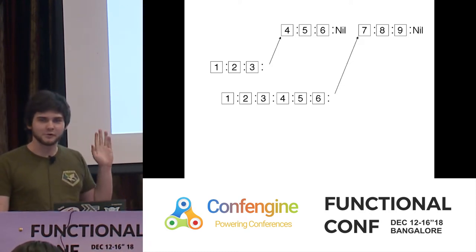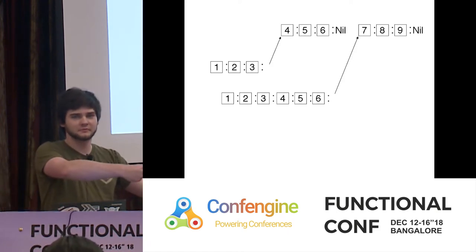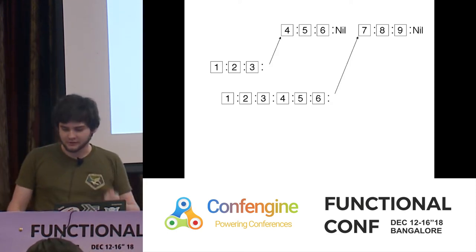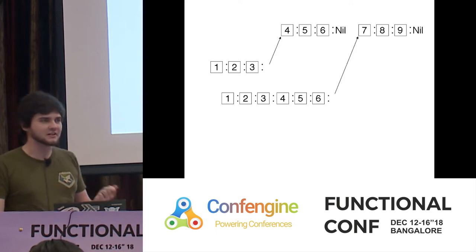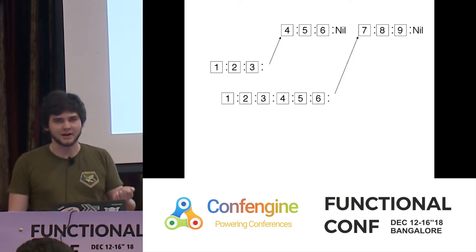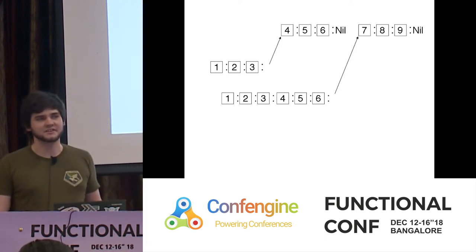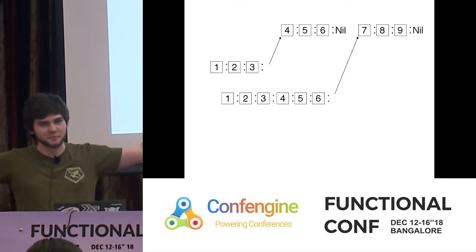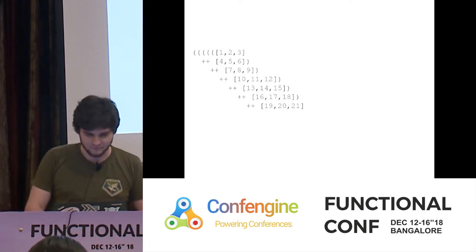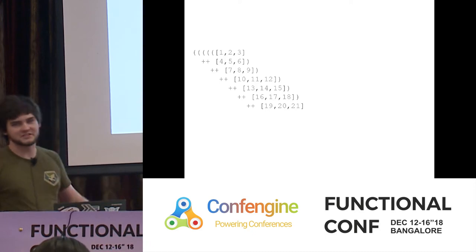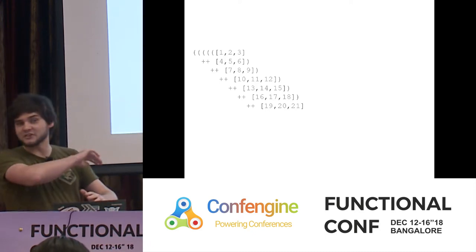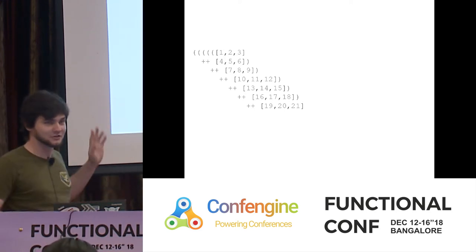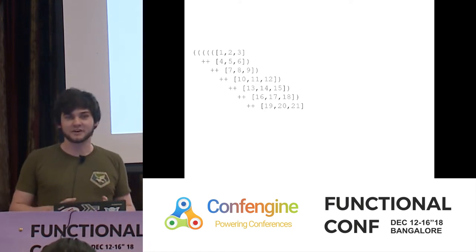List append takes linear time in the length of the left list. When we left-associate our list appends, we build up a bigger and bigger left list as we go, so each append becomes more expensive. That really matters if we're appending many lists. If I had many very long lists, having left-associated append would be a disaster — it'd be O(n²). We're building up a bigger list on the left each time.